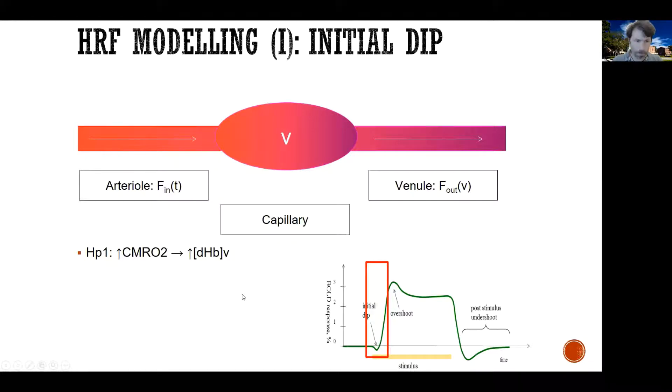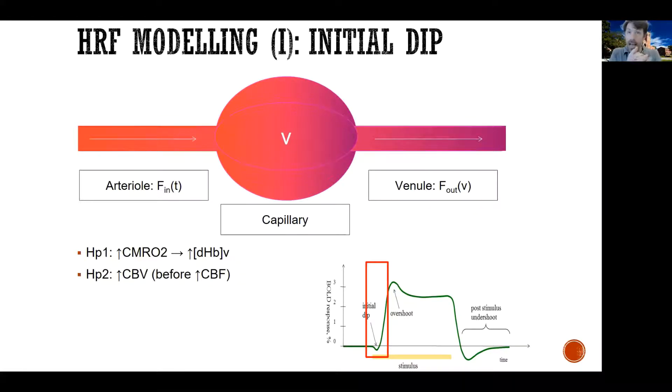The second theory is that instead what's happening is that as the neural events trigger a relaxation in the smooth muscle surrounding the capillaries, the capillary will expand before cerebral blood flow increases. In fact, the expansion is what calls a greater cerebral blood flow. And so as the CBV, as the cerebral blood volume increases and the so-called balloon expands, more deoxygenated hemoglobin can be fit in the same amount of space.